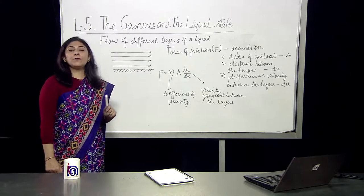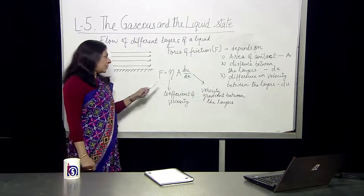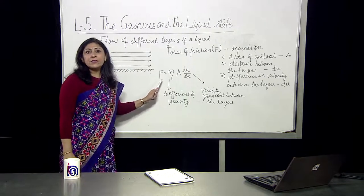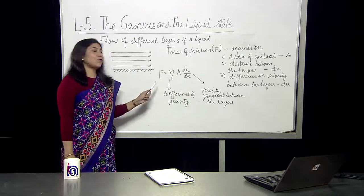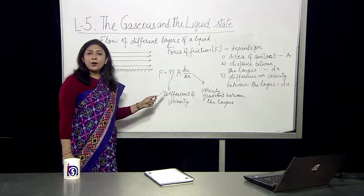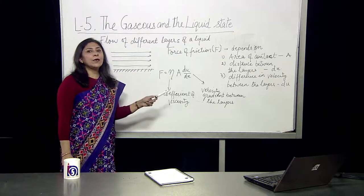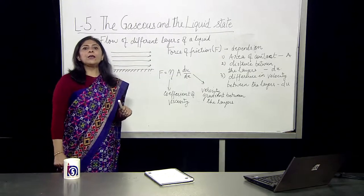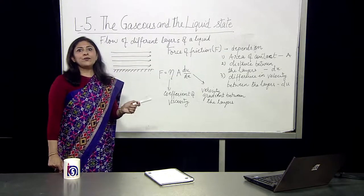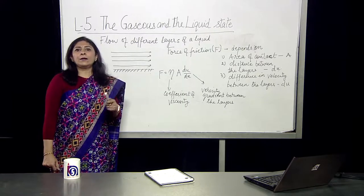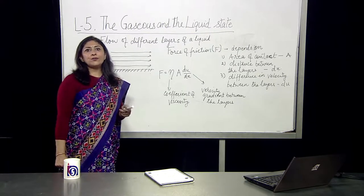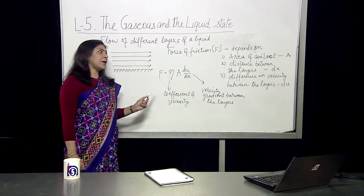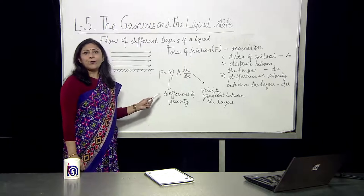How do we derive the unit of viscosity? In CGS units, viscosity is dyne per centimeter squared. In MKS units it is Newton per meter squared, or we can say Pascal-second. The viscosity unit is also known as poise. We can say 1 Pa·s is equal to 10 poise.